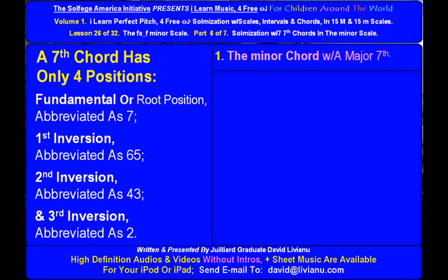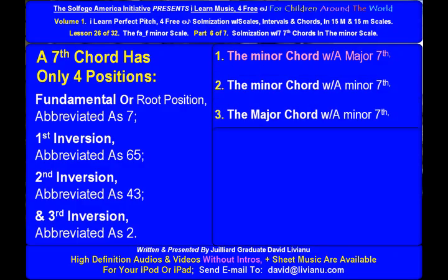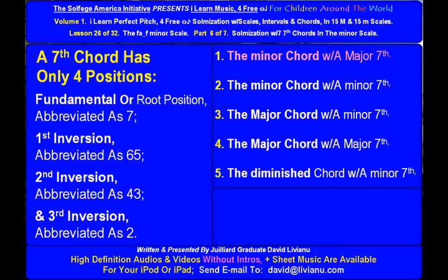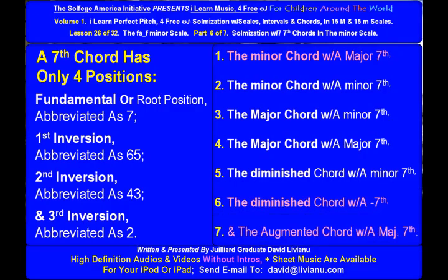The seven seventh chords are: the minor chord with a major seventh, the minor chord with a minor seventh, the major chord with a minor seventh, the major chord with a major seventh, the diminished chord with a minor seventh, the diminished chord with a diminished seventh, and the augmented chord with a major seventh.